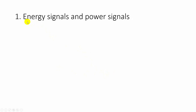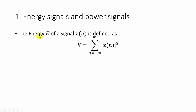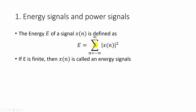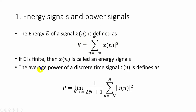The first category is energy signals and power signals. The energy of a discrete time signal x(n) is given by E, which is equal to the sum from n equals minus infinity to infinity of the modulus of x(n) whole squared. If this calculated energy is finite, then we can call the signal x(n) an energy signal. The average power of the discrete time signal x(n) is given by P, calculated as the limit as N tends to infinity of 1 over (2N+1) times the summation from n equals minus N to N of the modulus of x(n) whole squared.